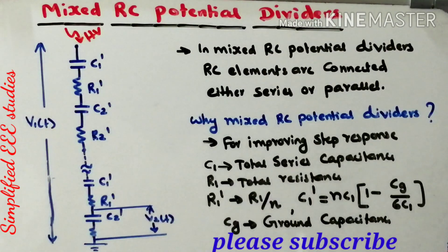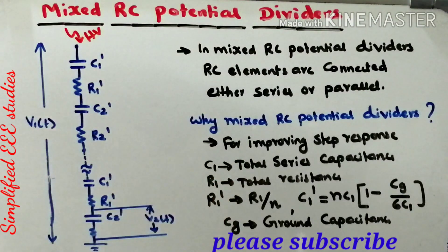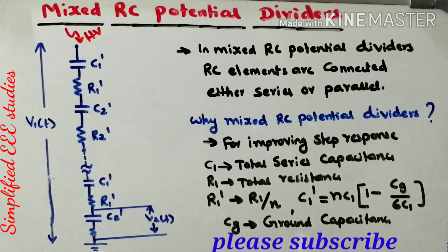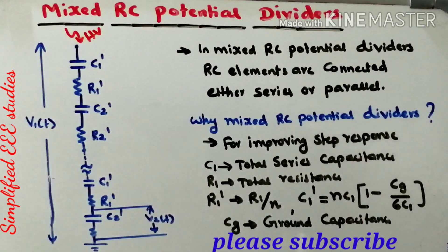In Mixed RC Potential Divider, RC elements are connected either in series or parallel — there is a certain combination. The main purpose is to improve the step response and to enhance more accuracy. It is a combination of a resistive potential divider and a capacitive potential divider.